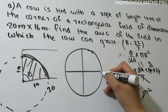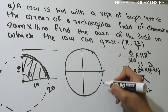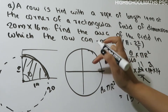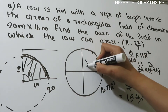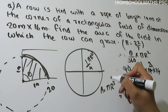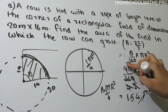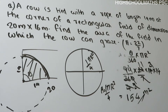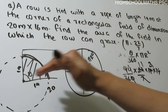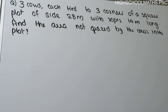This is a quadrant. The area is equal to the circle area, which is pi r square. Since it is a quadrant, this is 1 by 4 pi r square. This area is 1 by 4 pi r square, which comes from 90 by 360 giving 1 by 4. The area is 1 by 4 pi r square.